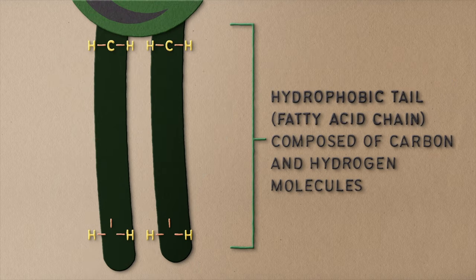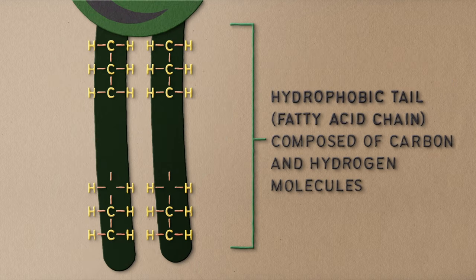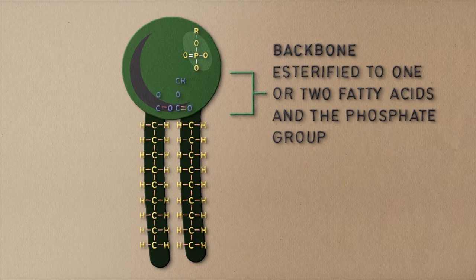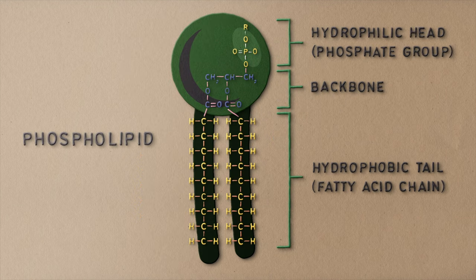Fatty acid chains are made up of hydrogen and carbon molecules. When you use a glycerol molecule as a backbone, combining the phosphate group with two fatty acid chains — voilà, you've got a phospholipid.